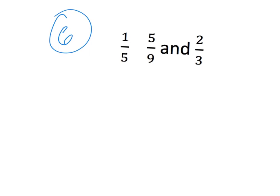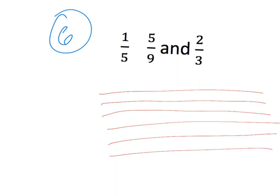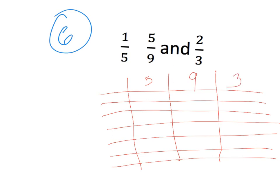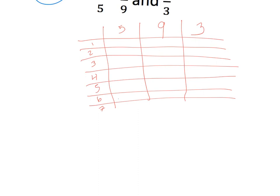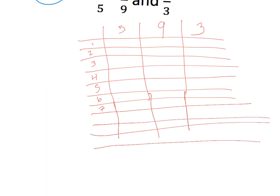A little bit more complex now. We've got three numbers we're working with. We'll go ahead and extend this down some, just because I know what the answer is and we'll need more space. Five, ten, fifteen, twenty, twenty-five, forty, forty-five, and fifty.